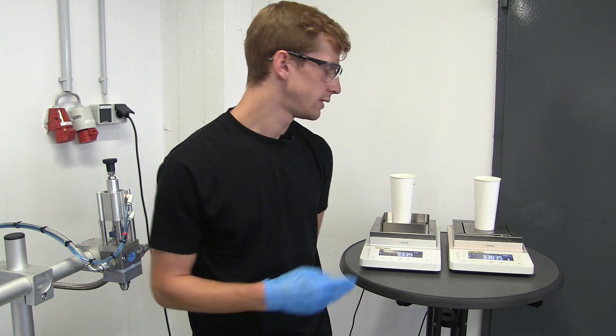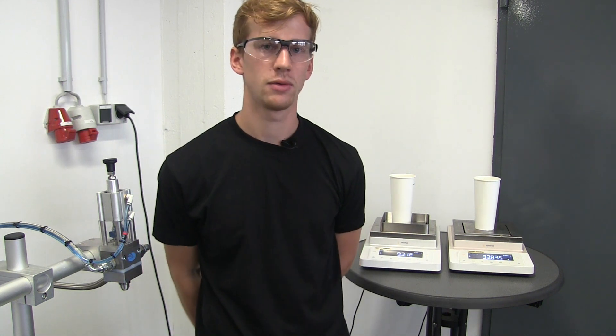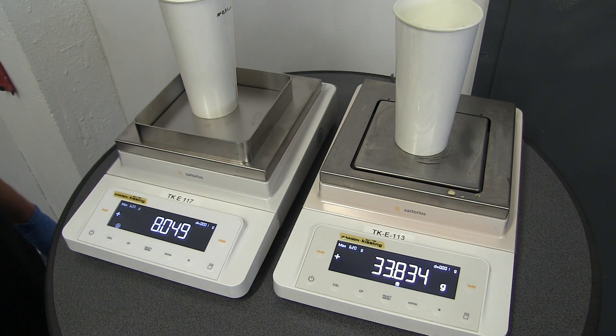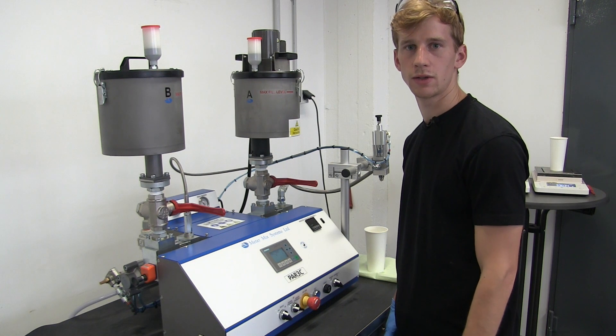You need to repeat the procedure up to five times. Based on the individual shot weights, you can then calculate the deviation from the desired mixing ratio as a percentage. After removing any air from the system and checking the synchronization, you need to adjust the shot volume to match the target component.